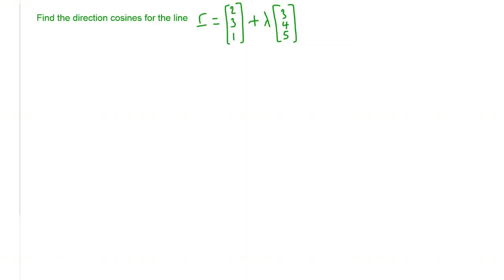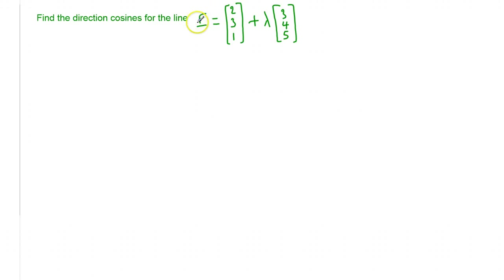Hi, in this lesson we're going to have a look at finding the direction cosines of a given line. I've got an example over here, and we've got the line r is equal to (2, 3, 1) plus lambda (3, 4, 5).